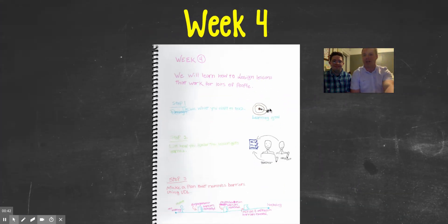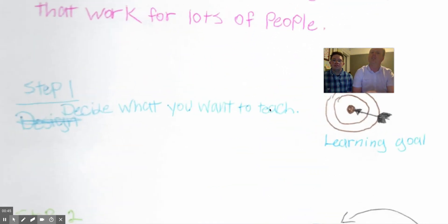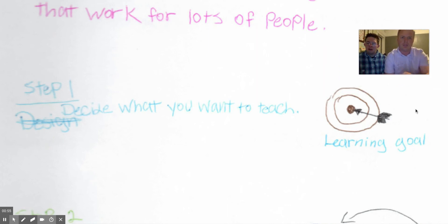EJ, what's step one to practical application of UDL? Decide what you want to teach. Nice. Decide what you want to teach. And what do you draw here for that? Target. Okay, why did you draw a target? Because it's a learning goal. Okay, it's all around learning goals, knowing what you want to hit, knowing your target. Okay, what's step two?